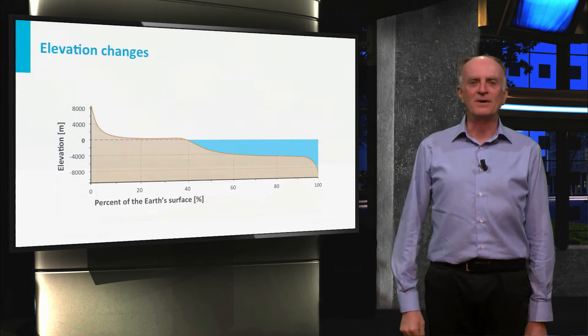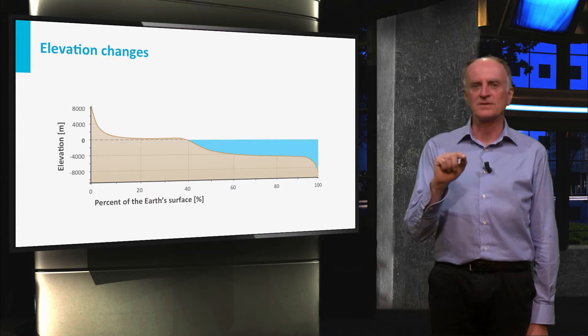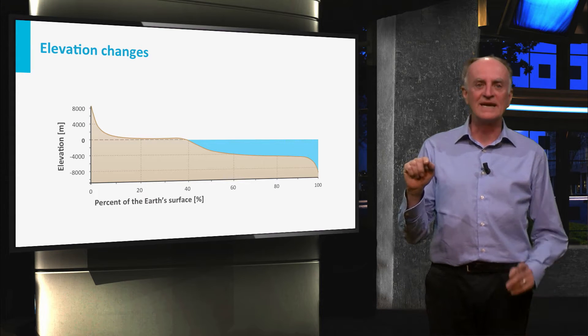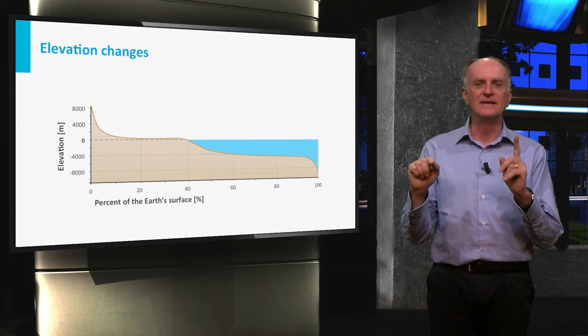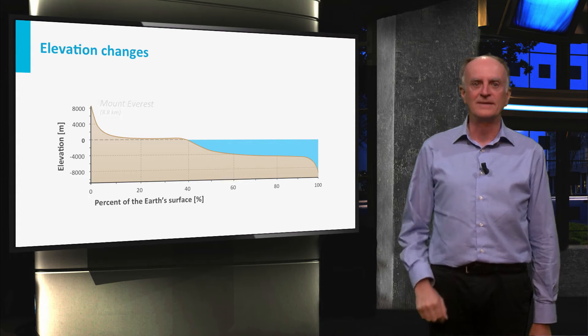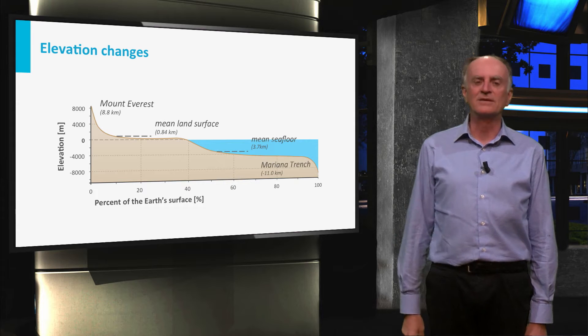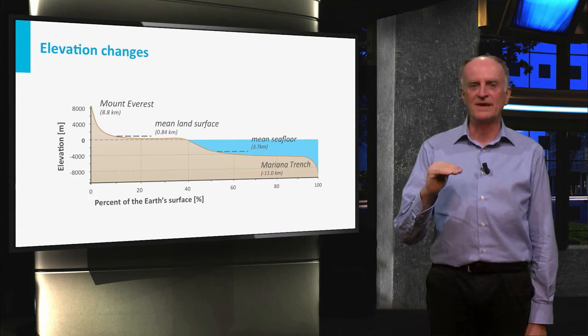The diagram on the slide shows the percentage of the Earth's surface on the horizontal axis, which lies at a certain altitude indicated on the vertical axis. You can see that something like 30% of the Earth's surface lies at around 500 meters.